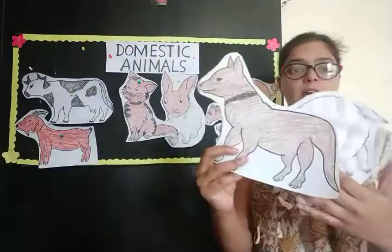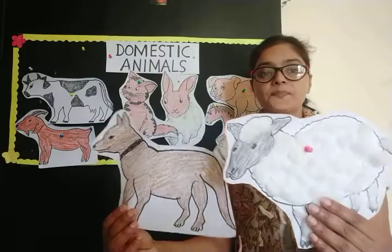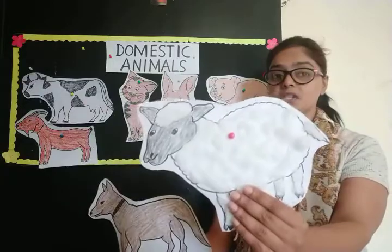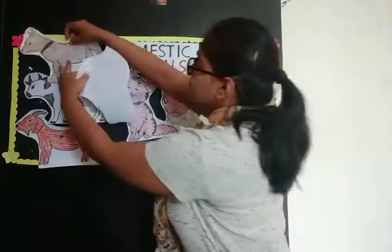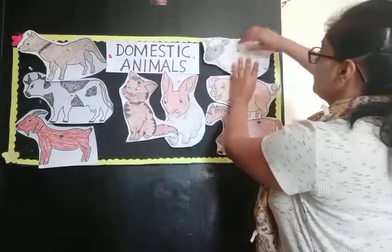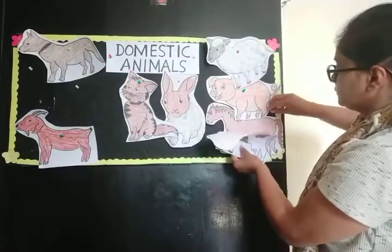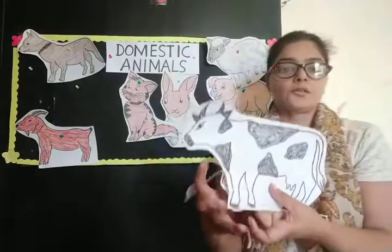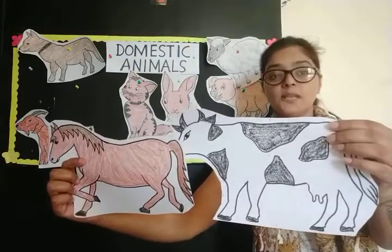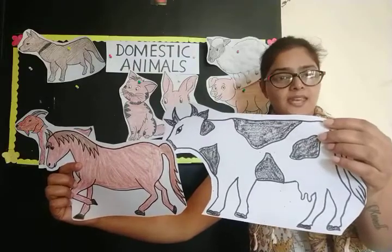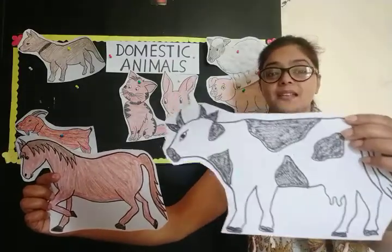Now tell me children, I have two pictures here — dog and sheep. Can you tell me, children, which one is the sheep? Is this the sheep? No. Is this the sheep? Yes, it's a sheep. Now children, here are two pictures — tell me who gives us milk. Cow gives us milk? Yes. Horse gives us milk? No. Cow gives us milk. It's a cow.